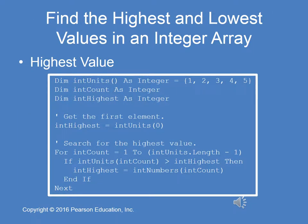One of the common processes performed on values stored in an array is locating the highest and/or lowest value stored in that array. Let's go through highest first — lowest is very similar. We declare our array int units and initialize it to 1, 2, 3, 4, and 5. Then we declare our counter int count as an integer, and we declare a variable to hold the highest value: int highest, also an integer.